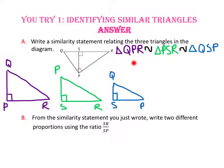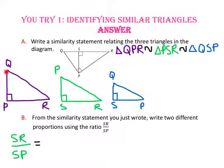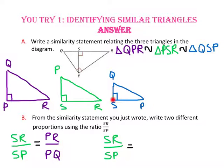In part B, we use the similarity statement to write two different proportions using the ratio of the length of segment SR to the length of segment SP. Since SR and SP are the long and short leg of the medium triangle, we match them to the long and short leg of the big and small triangles. First proportion: SR to SP equals PR to PQ. Second proportion: SR to SP equals SP to SQ.